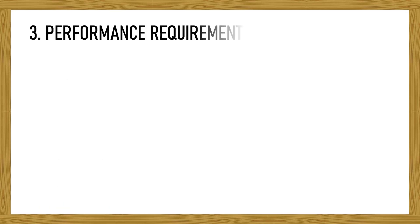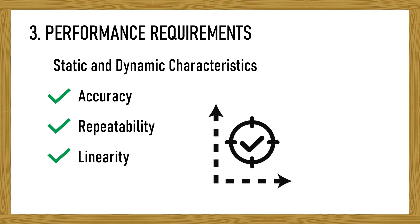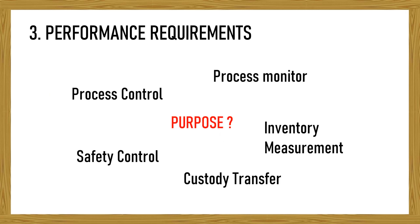Third factor: each instrument has static and dynamic characteristics. Accuracy, repeatability, and linearity are some characteristics that are mostly being concerned. The selection of instrument based on performance requirement depends on the purpose of the instrument, whether is it for process monitor, process control, safety, inventory measurement, or custody transfer metering.